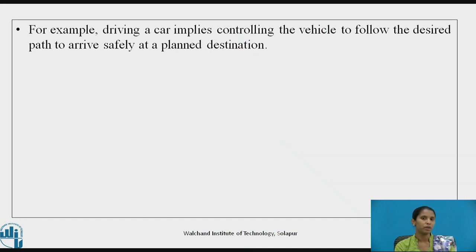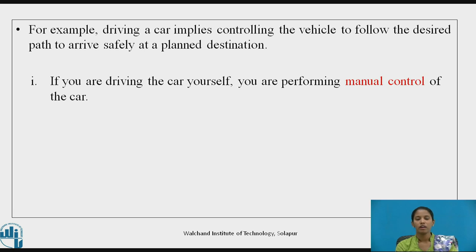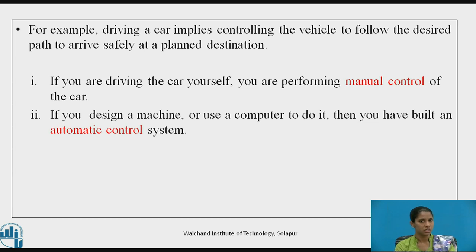Now let us see an example of manual and automatic control systems. Let us take an example of a driver driving a car. It implies controlling the vehicle to follow the desired path to arrive safely at its planned destination. If you are driving the car yourself, you are performing manual control of the car. Whereas if you design a machine or use a computer to do it, then you have built an automatic control system.